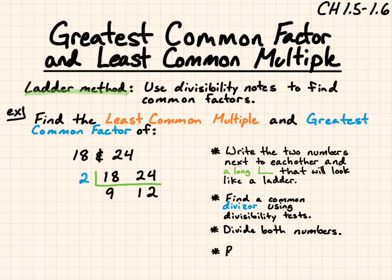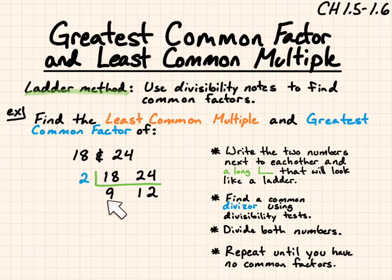Then repeat it until you don't have any common factors. Do 9 and 12 have any common factors? I don't have 2 anymore because this is odd, but we'll try 3. And 3 does go into 9 and 3 goes into 12. So I can put 3. 9 divided by 3 is 3, and 12 divided by 3 is 4. Now I have no common factors.